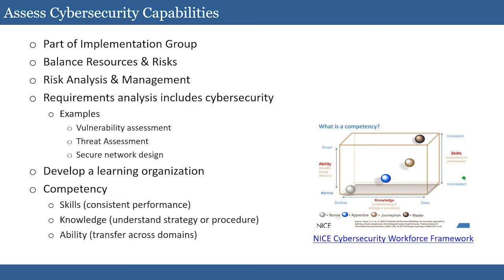One way to approach this is to look at our existing capabilities. We'll talk about the idea of implementation groups later in the context of the CIS-20 controls, but it has a similar feel to the tier levels. Are there certain types of behaviors we follow? Are there certain scopes of resources and skills we can bring to bear based on the size of our organization, our budget, our capabilities, and so forth?